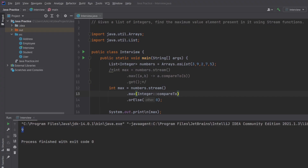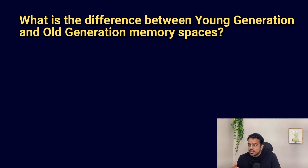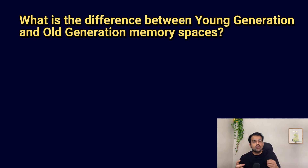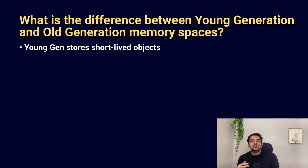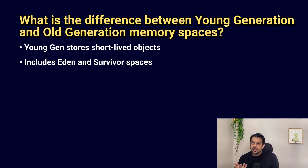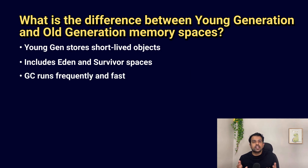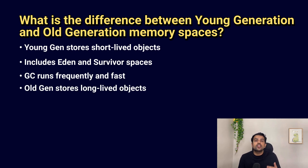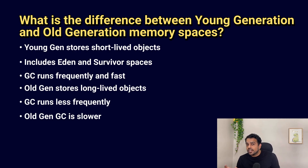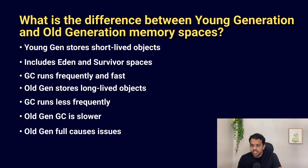The next question is: what is the difference between Young Generation and Old Generation memory spaces? This is related to Java memory management. Young Generation stores short-lived objects and includes Eden and Survivor spaces — garbage collection here is very frequent but fast. Old Generation stores long-lived objects — garbage collection here is less frequent but takes more time. If the Old Generation fills up, it can cause performance issues.